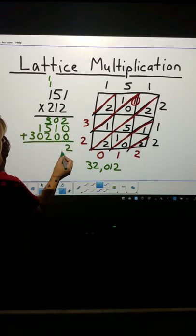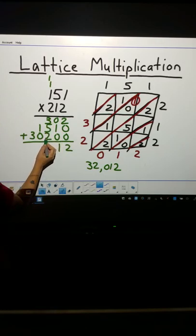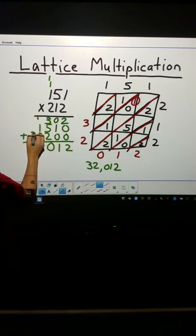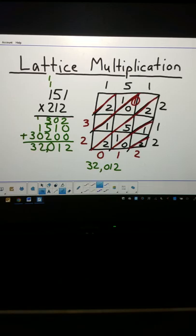2 plus all these zeros is 2. There's a 1 in there with some zeros. 3 plus 5 is 8, plus 2 is 10. Regroup. 1 plus 1 is 2. The 3 comes down. Add a comma. Isn't that cool? Got the same product.